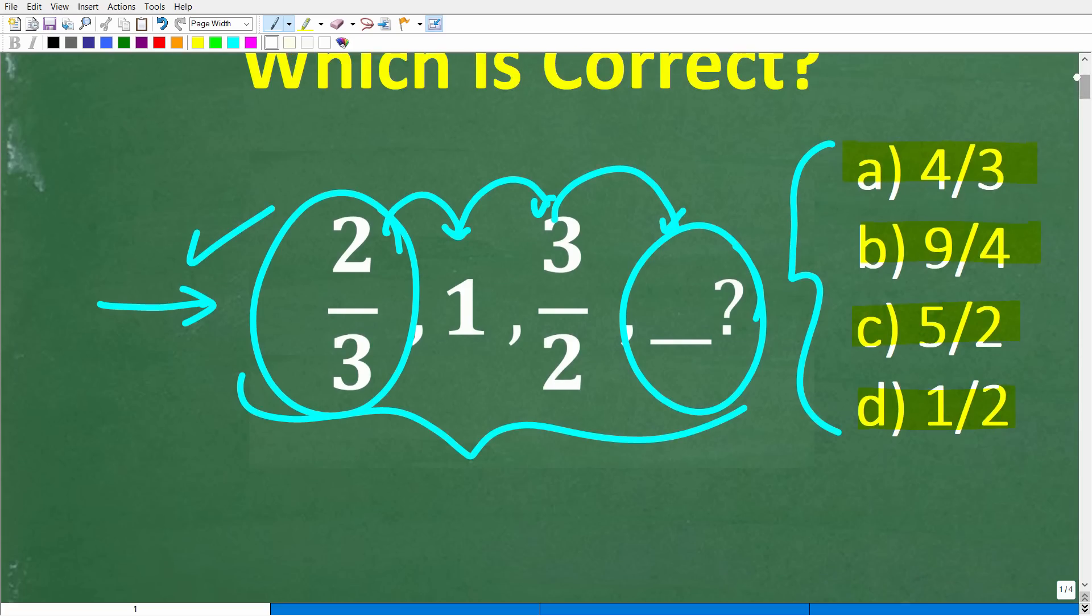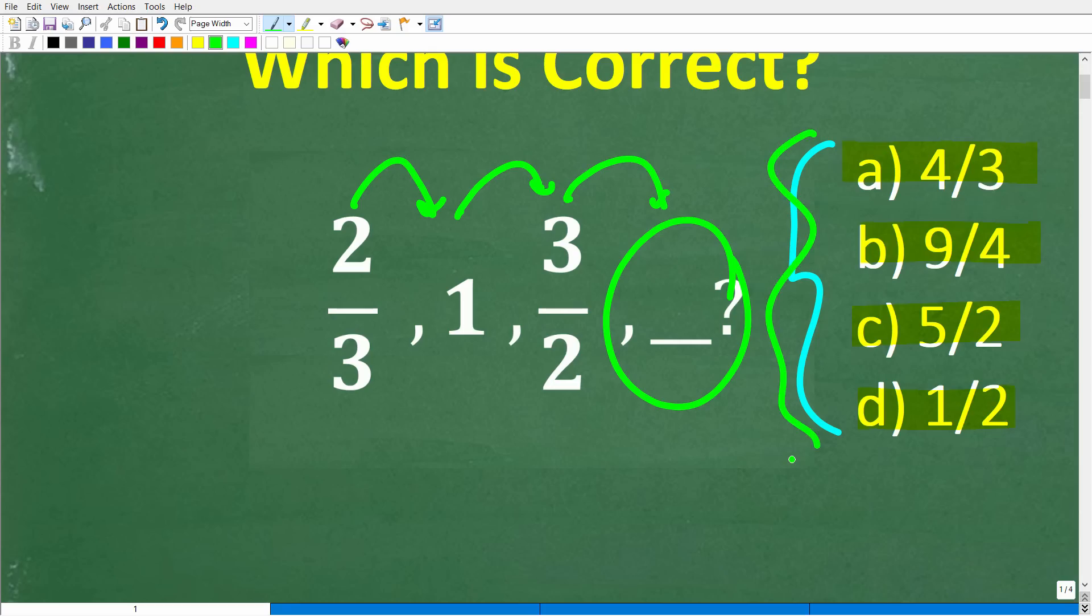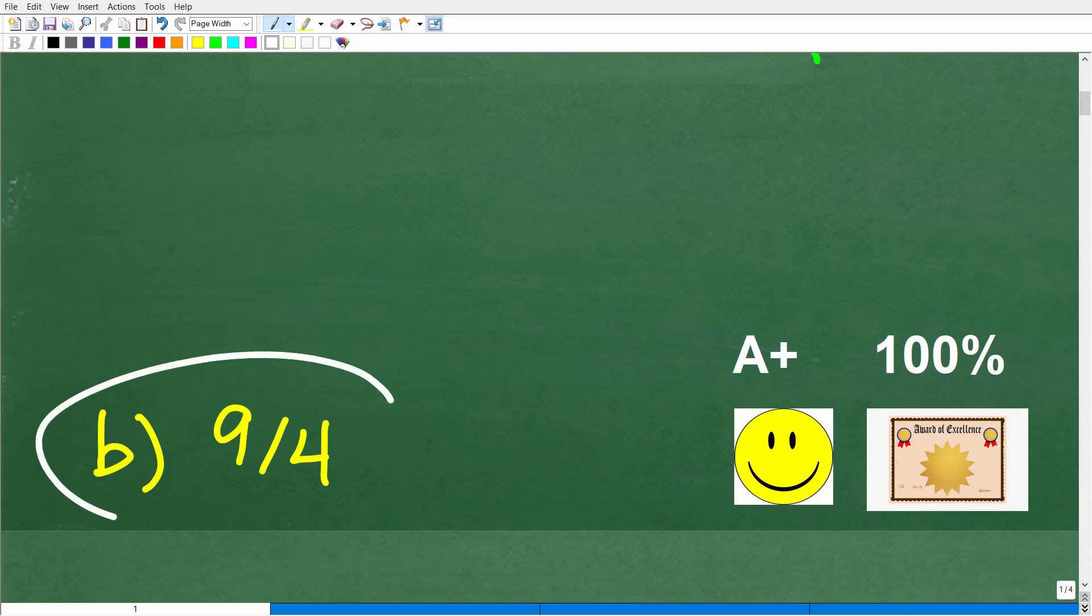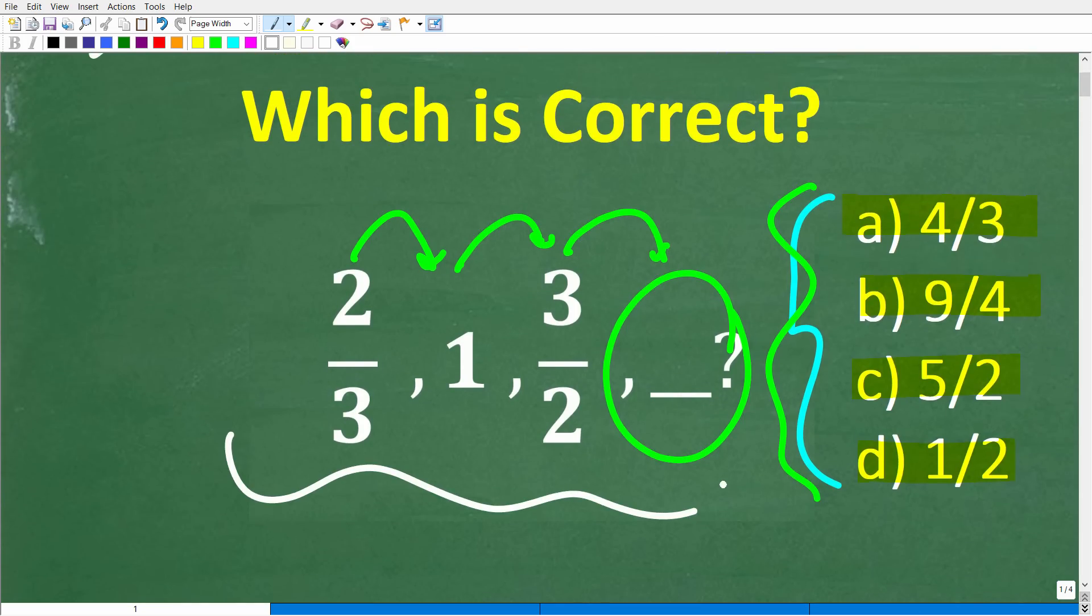One more time, let's take a look at these numbers. We have two-thirds, then one, and then three-halves. The correct answer is B, nine over four. Now if you got this right, you'd definitely get a happy face and a plus, 100%, and a certificate of excellence. Because even if you didn't know it, what you just did here is solve a geometric sequence problem.